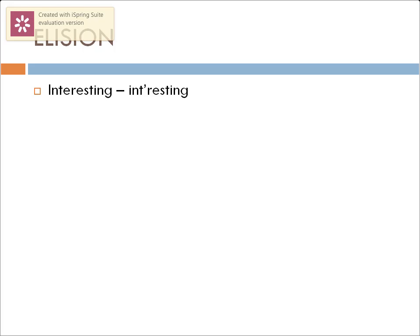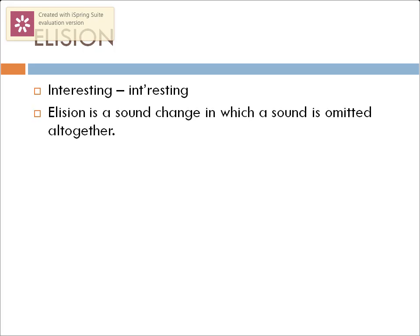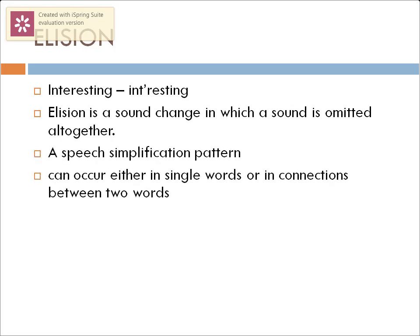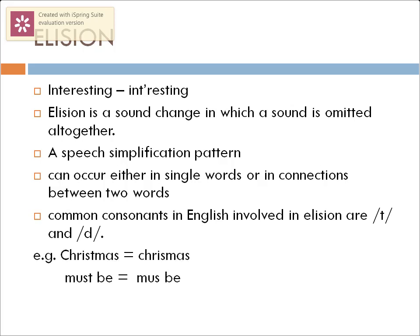Now let's come to the second category: elision. Looking at the previous example, 'interesting' sounds like 'intresting' — we write it as a four-syllable word but say it as three syllables. Elision is a speech simplification pattern in which a sound is totally omitted. It can occur either in single words or in connection between two words. For example, in 'Christmas,' the sound /t/ is totally omitted and we only say 'Christmas.'